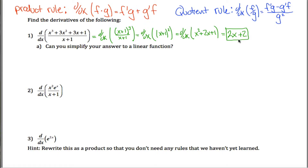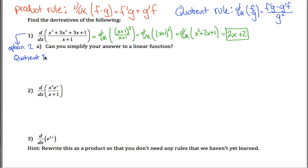Yes, I already did — here's a linear function right here. However, most people would not take that approach. Most people would use option 2, which is the quotient rule, because you have something divided by something else. Playing the role of f in the quotient rule is the numerator, x cubed plus 3x squared plus 3x plus 1.